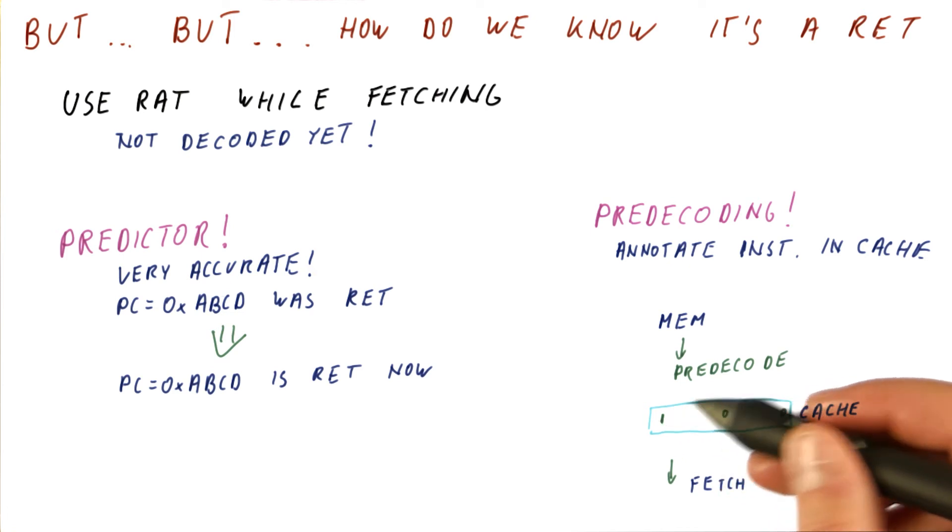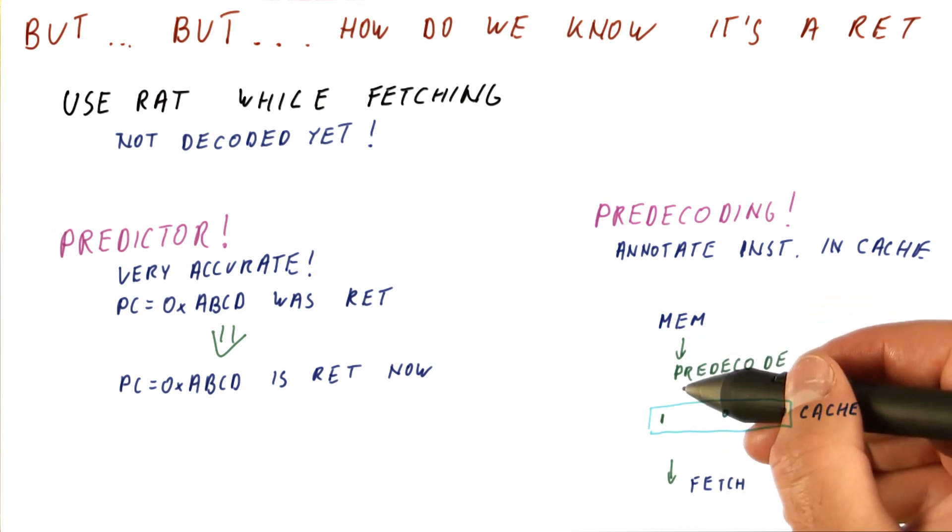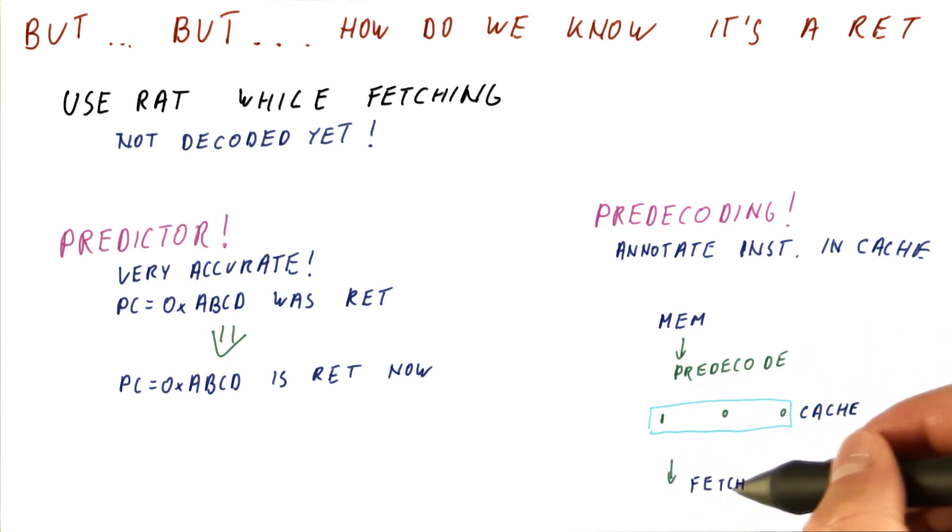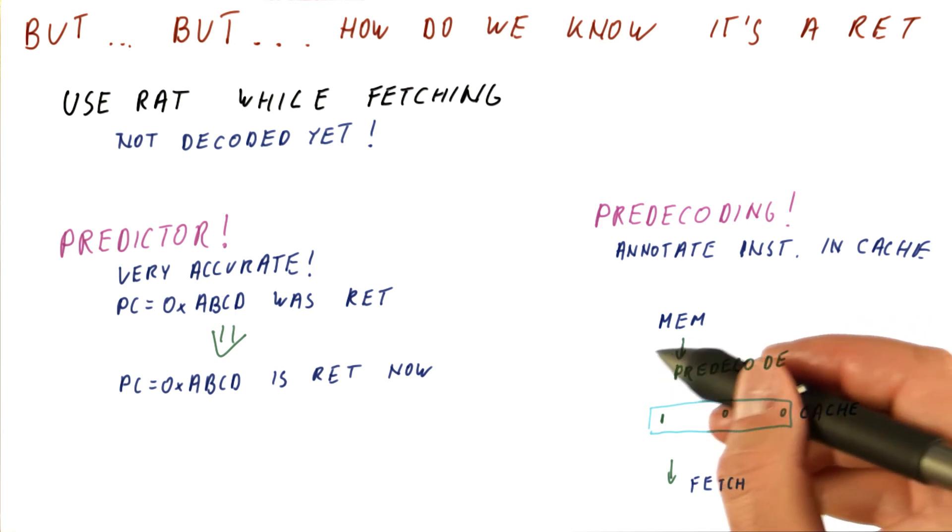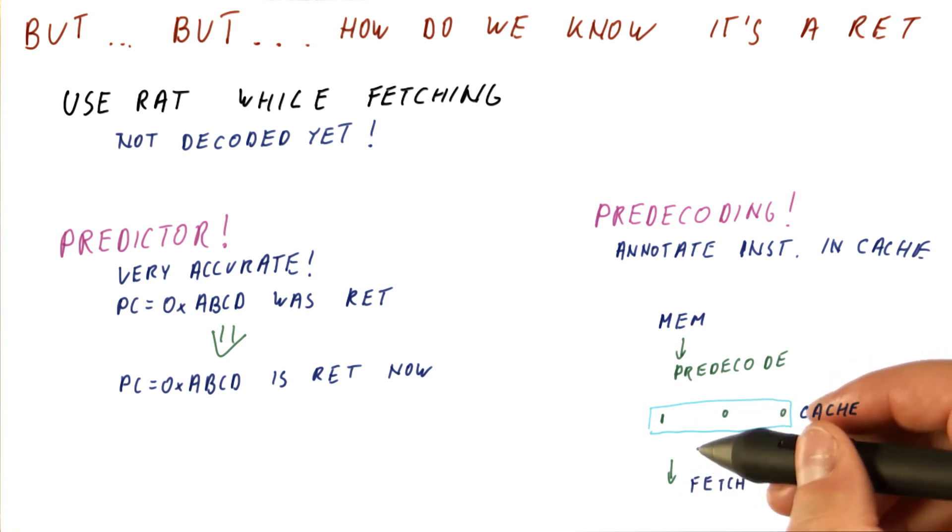The alternative to this would have been to just fetch the instructions from memory to cache as they are, and then every time we fetch, we have to figure out what this instruction is. Because it's also more power efficient to do this once and then fetch the instruction many times, rather than redo it every single time, pre-decoding is a very popular approach.